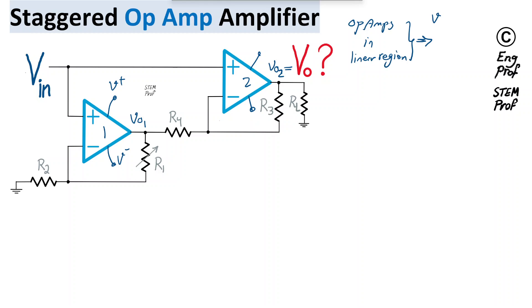As a result, that means I can assume virtual short is in place for op-amps, which means the voltage at the positive terminal should be equal to the voltage at the negative terminal for each op-amp.